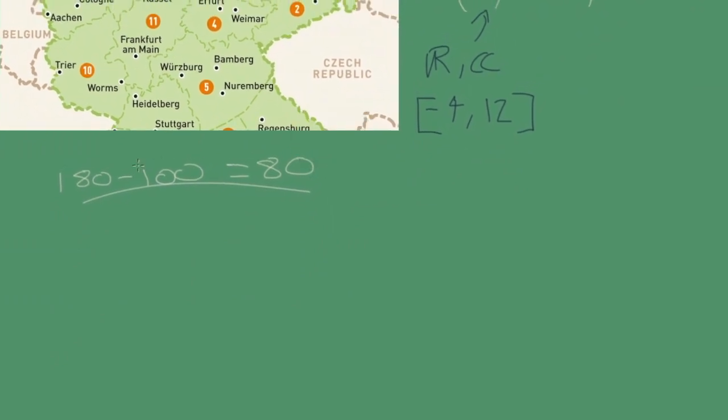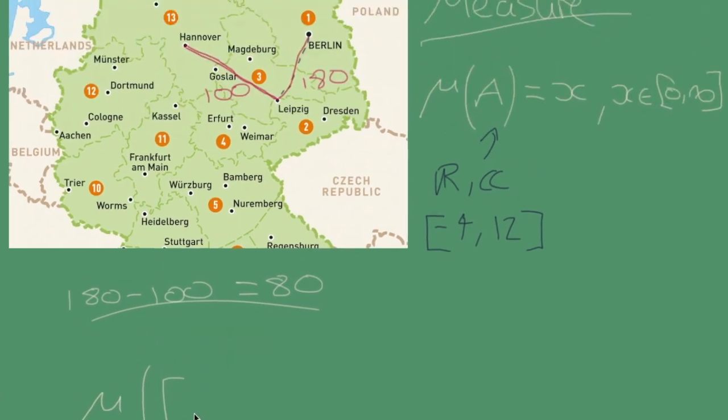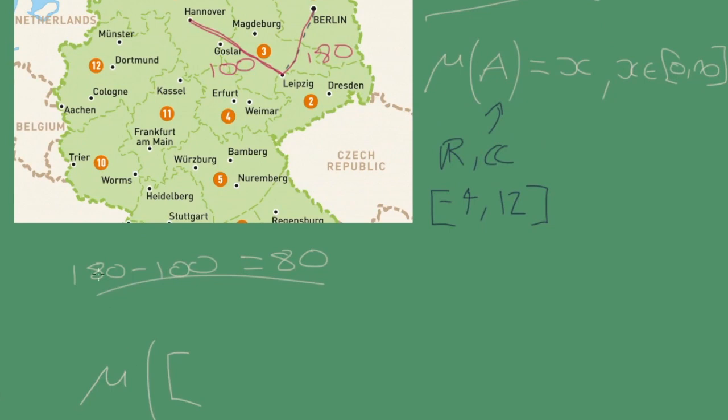So let's think about this again, our example of Germany. How would we write this as a set? So we've got our function μ, and we could write this as, what did we say? The distance was, so this is, we can think of this...